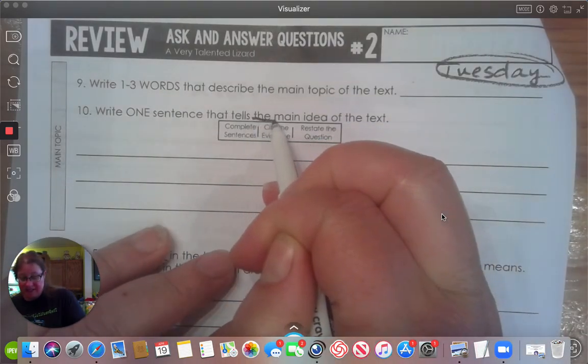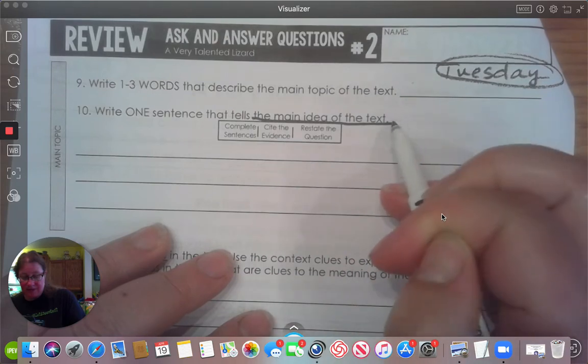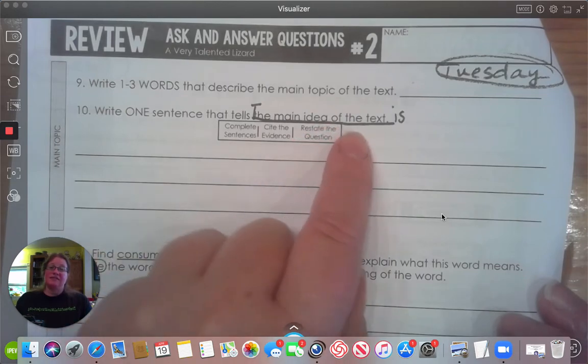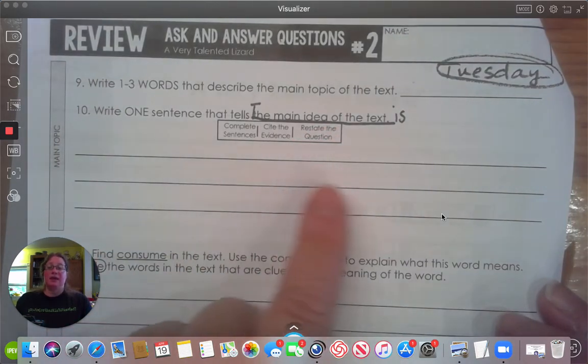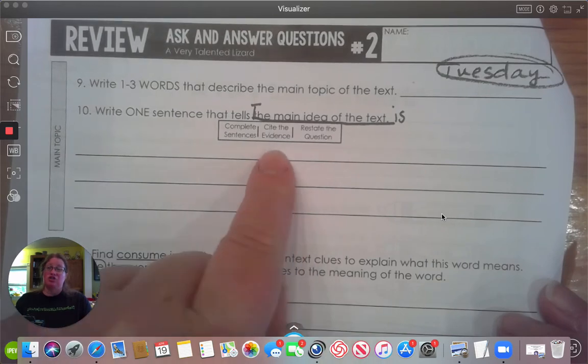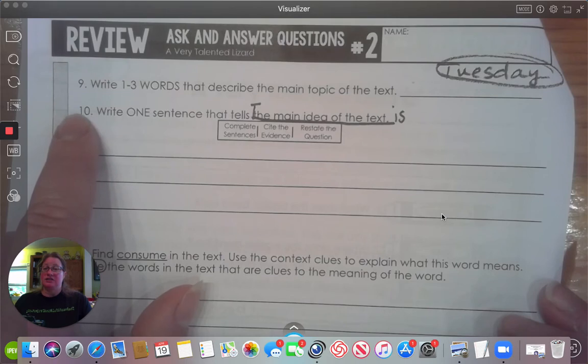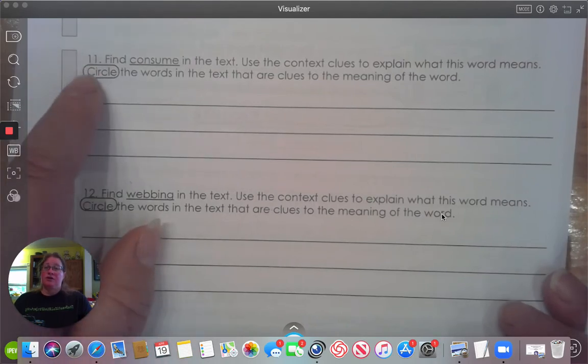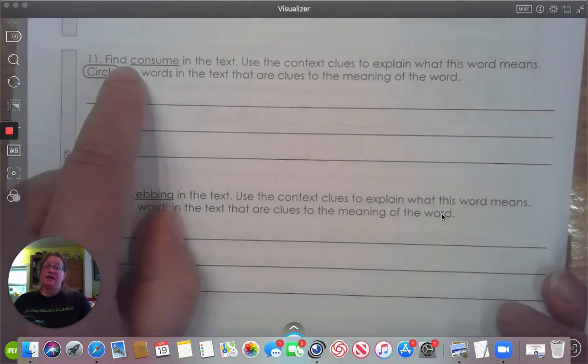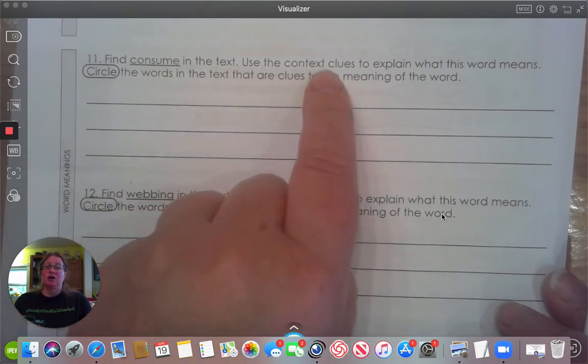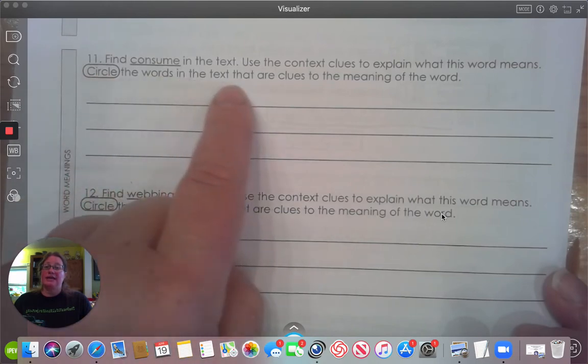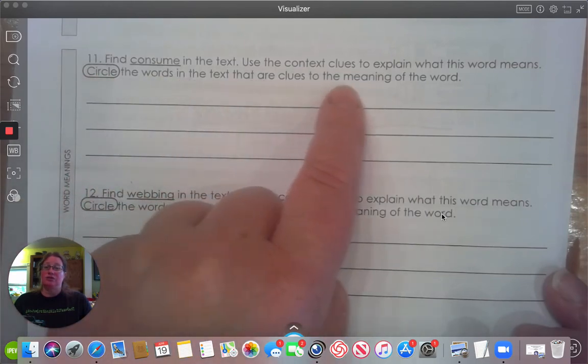If you need a sentence stem, here would be your sentence stem. The main idea of the text is, and finish the sentence. Make sure you circle your evidence in the text, and write the number 10 next to it. Number 11. Find consume in the text. Use the context clues to explain what the word means. Circle the word in that text that are clues to the meaning of the word.